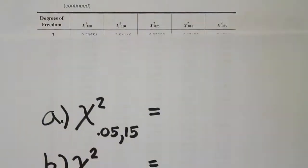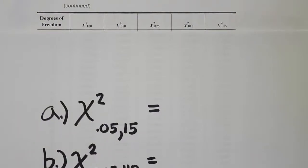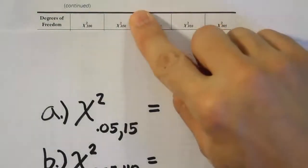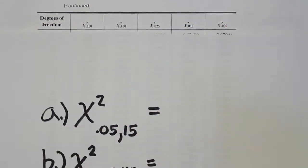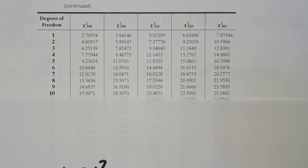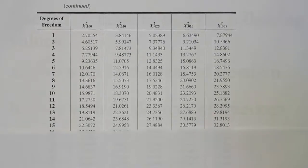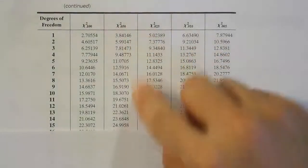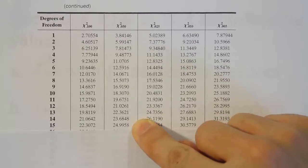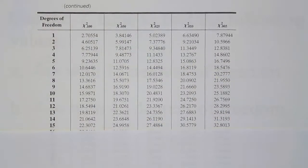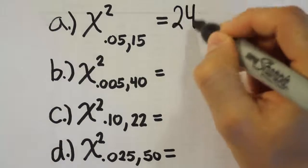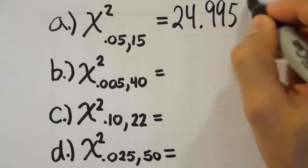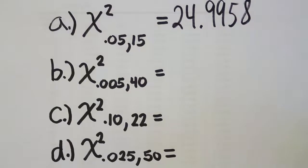Let's find the 0.05 column in our chi-squared table. Looking at the top row, we see the 0.05 column is the second column. Scrolling down to 15 degrees of freedom, we find the value 24.9958. So the answer to part A is 24.9958.